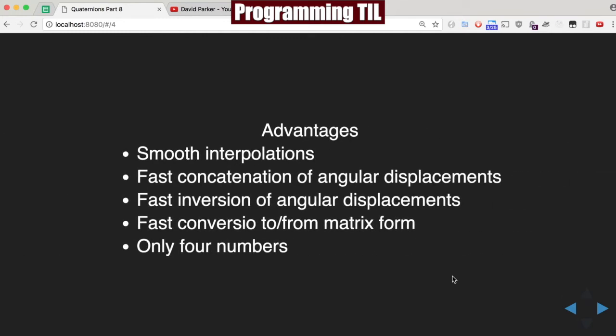So some advantages and disadvantages of using quaternions. They're going to have super smooth interpolations like before. They're great for concatenation, for angular displacements, and inversion of angular displacements. Fast conversion to and from the matrix form, and there are only four numbers.